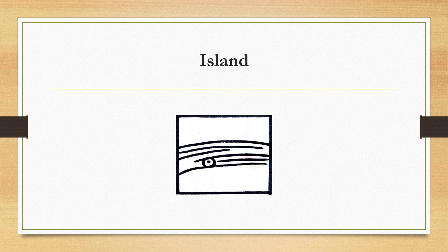Next is island — a point or dot within the overall pattern of the fingerprint. It is a very small, short ridge that appears as a dot or isolated point.